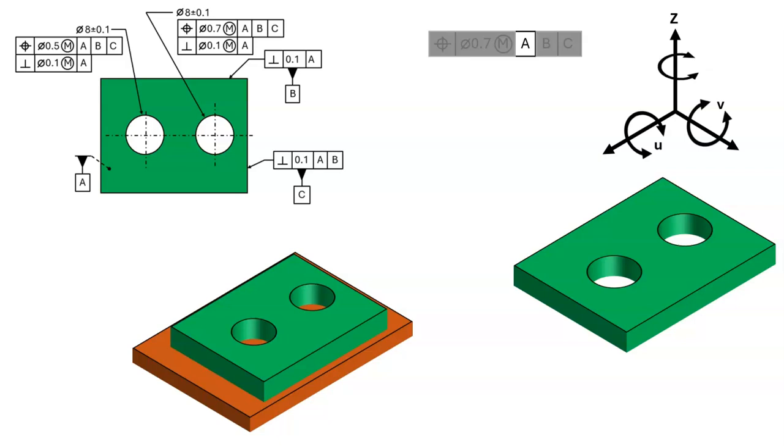Since datum feature A is primary, datum feature A must first make maximum contact with simulated datum A. They will make a minimum of three points of contact. This will constrain translation Z and rotations U and V.